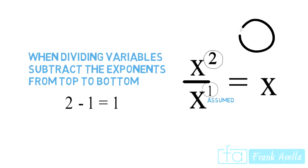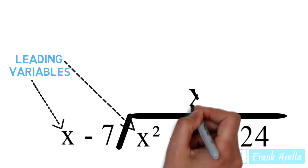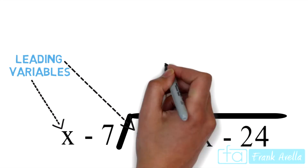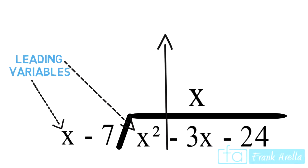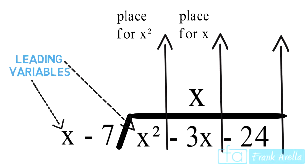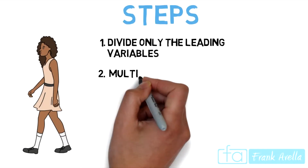Now the question is where do we place x to the first power. You should create three different placeholders: one for the x squared term, one for the x term, and one for the constants. The x term result gets placed in the x placeholder position above the division bar.